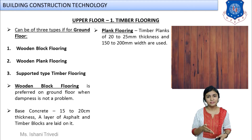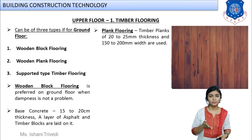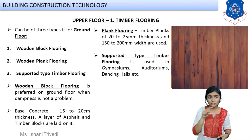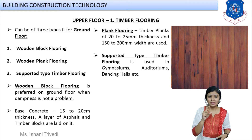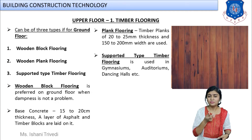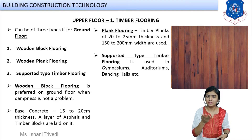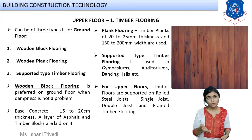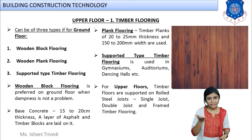The base concrete of cement mortar, cement concrete, or lime concrete of 15 to 20 cm thickness is laid, well rammed, and the flooring is constructed on top. For plank flooring, wooden planks — 20 to 25 mm thick and 150 to 200 mm (15 to 20 cm) wide — are used as long strips. The supported type of timber flooring is used in gymnasiums, auditoriums, and theaters — places where heavy loads are expected — supported on girders and joists with intermediate support provided below the flooring.